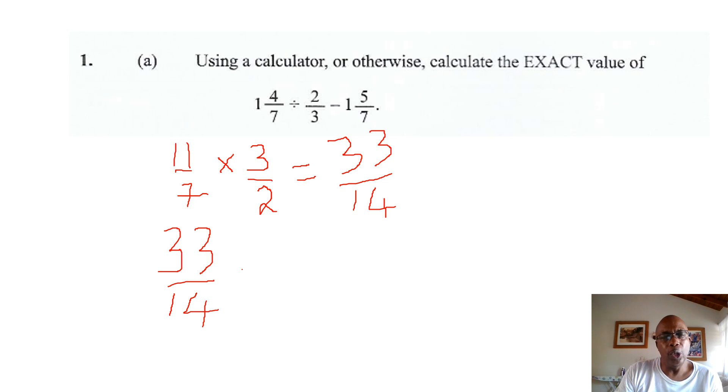Subtract and we convert the mixed number 1 and 5 sevenths to an improper fraction. 1 times 7 is 7. 7 plus 5 is 12, 1 times 7 over 7.